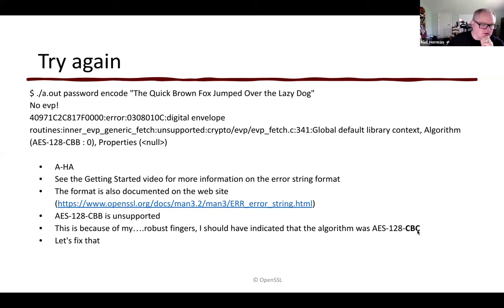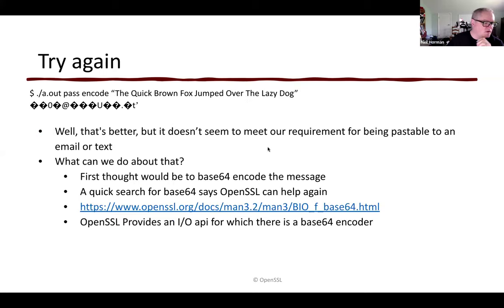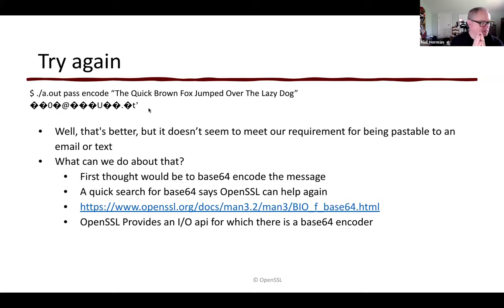We update the call to EVP_CIPHER_fetch with the proper cipher name. Running it again, we provide a password, our encode operation, and our message — and now we get some output. That's a step forward, but it doesn't meet our requirements for being pasteable to an email or text. It's binary output with lots of unprintable characters, so that's no good. What do we do about that?